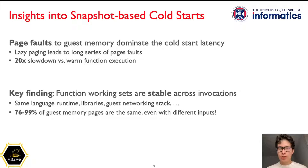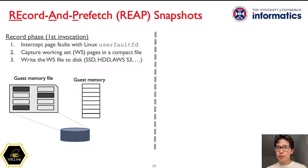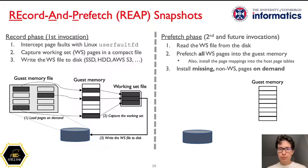Our key finding is that during processing different invocations, functions touch the same pages in the guest memory. Hence, a natural solution is to record the pages of each function's working set and prefetch these pages into the memory right upon another invocation arriving. Our record and prefetch solution, called REAP snapshots, consists of two phases. First is the record phase, where upon the very first invocation the system intercepts the page faults and loads the pages into the guest memory on demand, while at the same time capturing these pages as the function working set. After the invocation processing is finished, the captured working set is written back to storage.